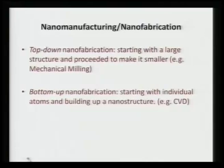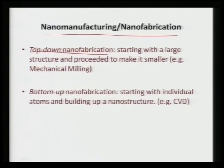Once we have those nano particles, we want to manufacture them into some useful shapes. There can be two different techniques of nano manufacturing or nano fabrication — producing a device or component in the size range between 1 to 100 nanometer. The first is called top-down nano fabrication. This becomes a necessity when we have a bigger entity available. We start with a much bigger material — it can be couple of micrometers, millimeters — and then we start breaking it down until it comes down to 1 to 100 nanometer, making it smaller and smaller.